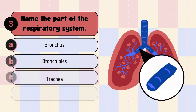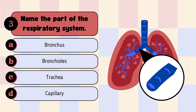Question 3: Name the path of the respiratory system. Look at the highlighted path in the diagram. A. Bronchus, B. Bronchiolus, C. Trachea, D. Capillary.